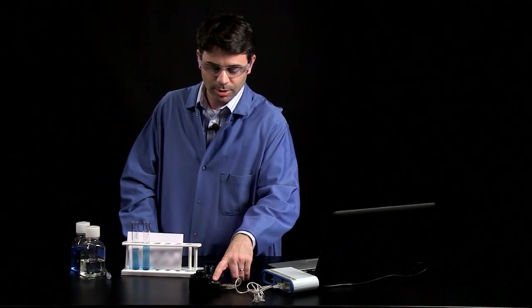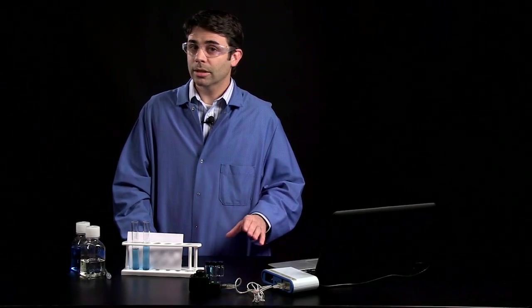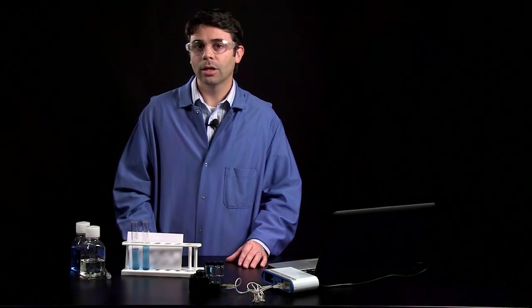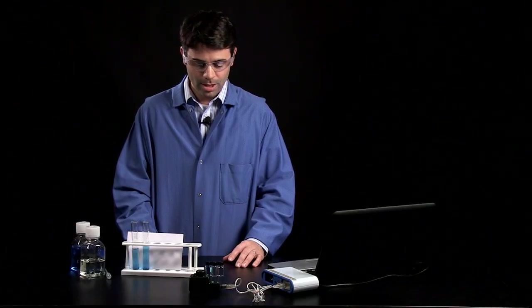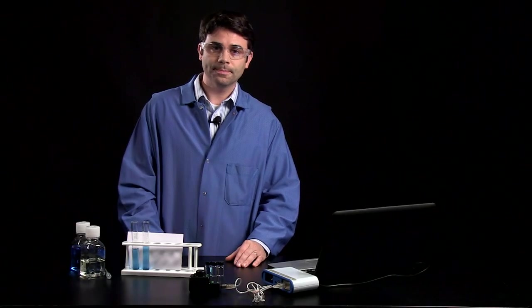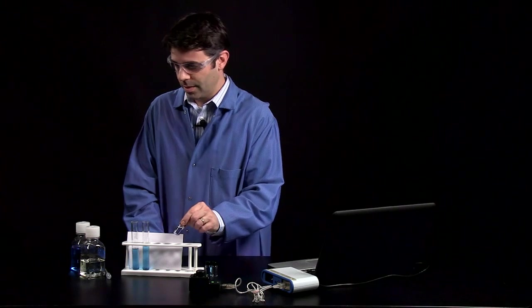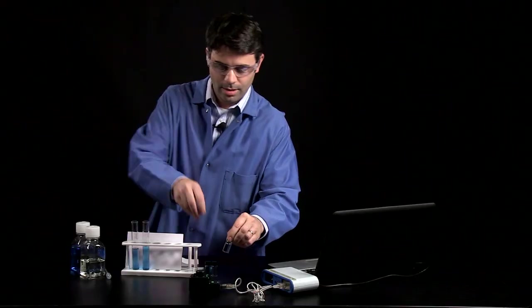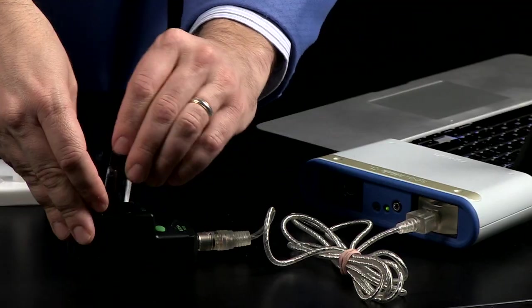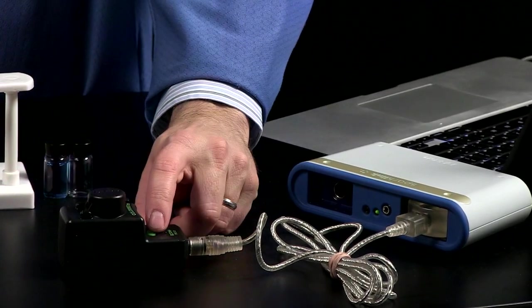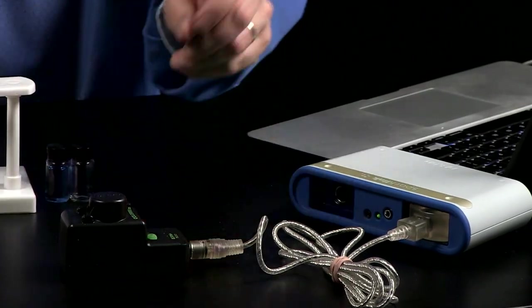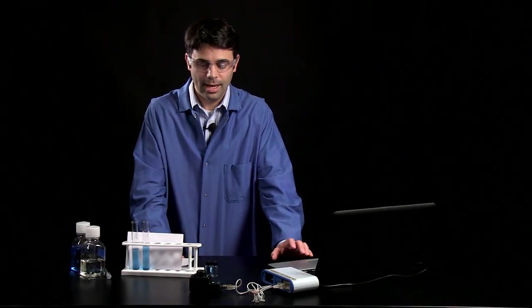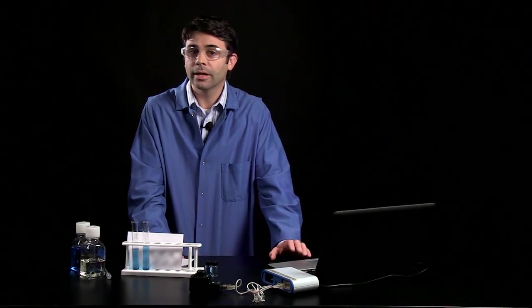Whenever we use the colorimeter, we want to do a couple things. We want to blank the colorimeter and select the appropriate wavelength for the colored solution that we're studying. To blank the colorimeter, I'm going to take a sample of the solvent, in this case water, put it in the colorimeter, and push the green button. A little LED light goes on showing me that it's working, and when the LED light goes off, then I know that it's calibrated.